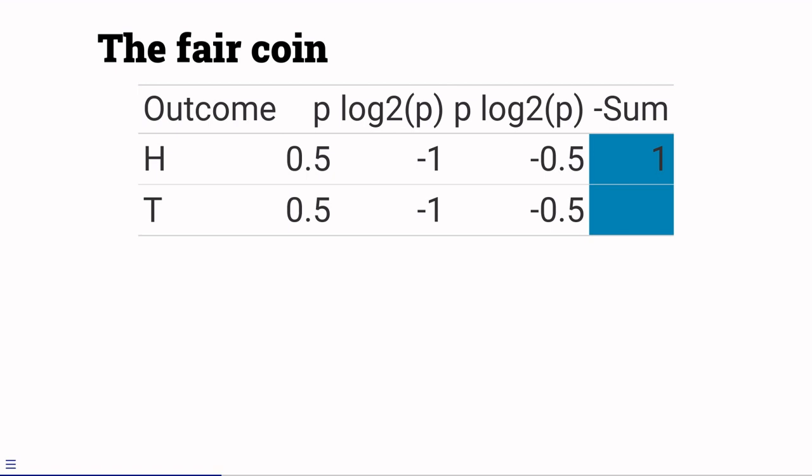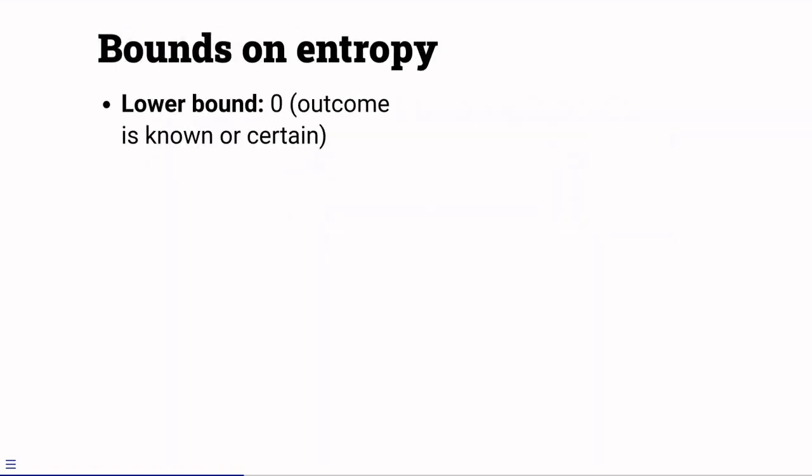Now, if we had a trick coin guaranteed to land heads up, then entropy would be 0. Entropy always has a lower bound of zero, making it ratio variable. But the upper bound of entropy depends on the number of possible events. If there are j possible events, then the maximum entropy happens when all j events are equally probable. Entropy is then equal to log to the base 2 of the number of events.